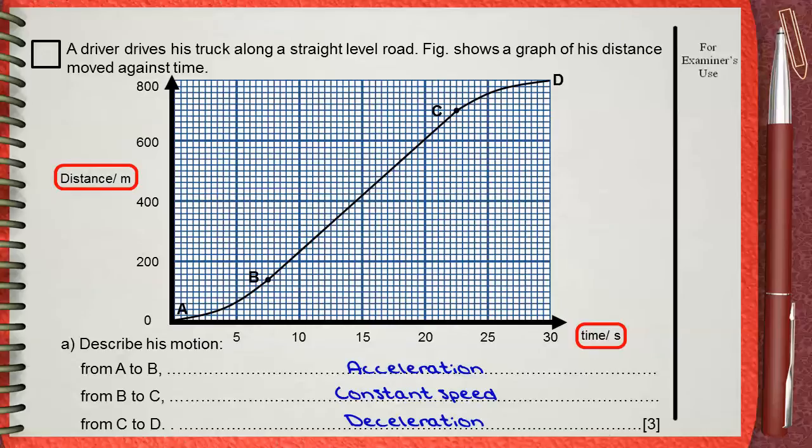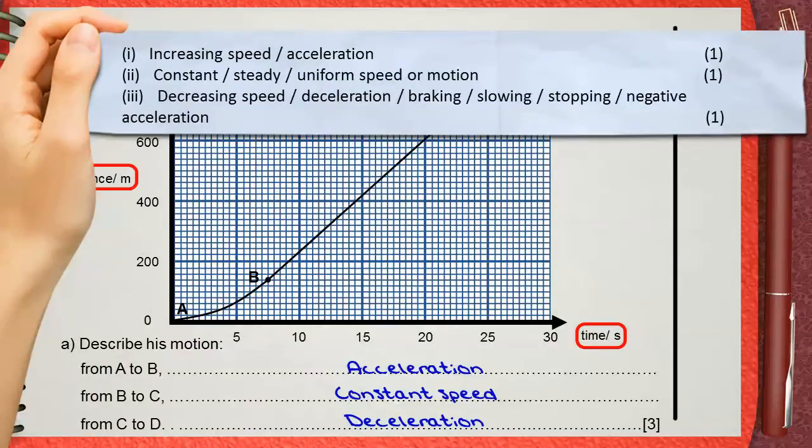Also the mark scheme gives other alternatives. You can say increasing speed instead of acceleration. You can say constant, steady or uniform speed or motion. Also you can say decreasing speed, deceleration, braking, slowing, stopping or negative acceleration. All these expressions are for the same meaning.